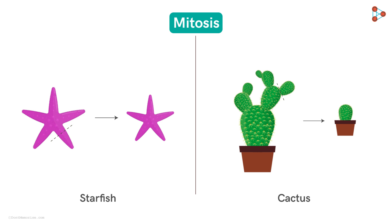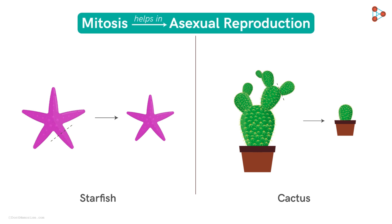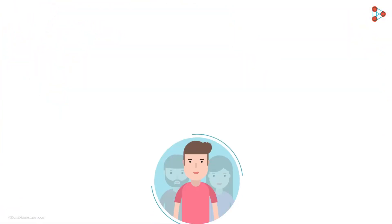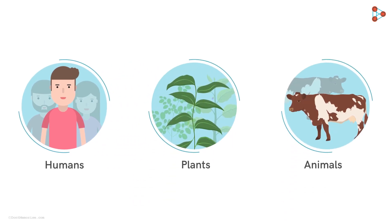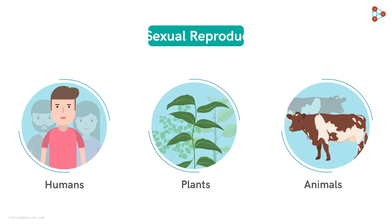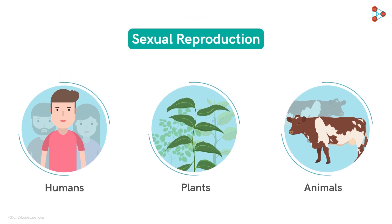As we have studied, mitosis helps in asexual reproduction in certain organisms, like in the case of this cactus plant. But in contrast to this, humans, along with many other plants and animals, produce new individuals exclusively through a process called sexual reproduction. The complicated yet necessary process of sexual reproduction is the key to species propagation in higher animals.